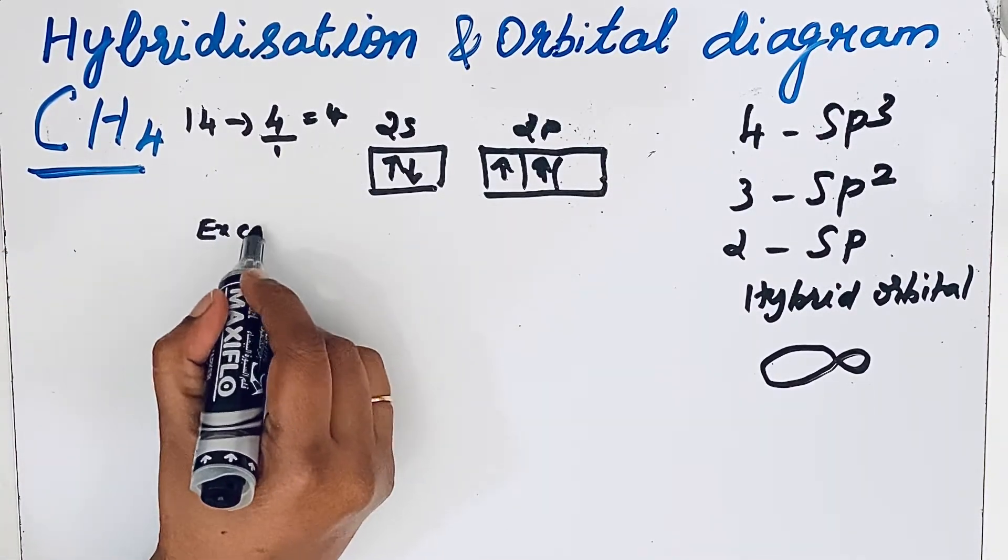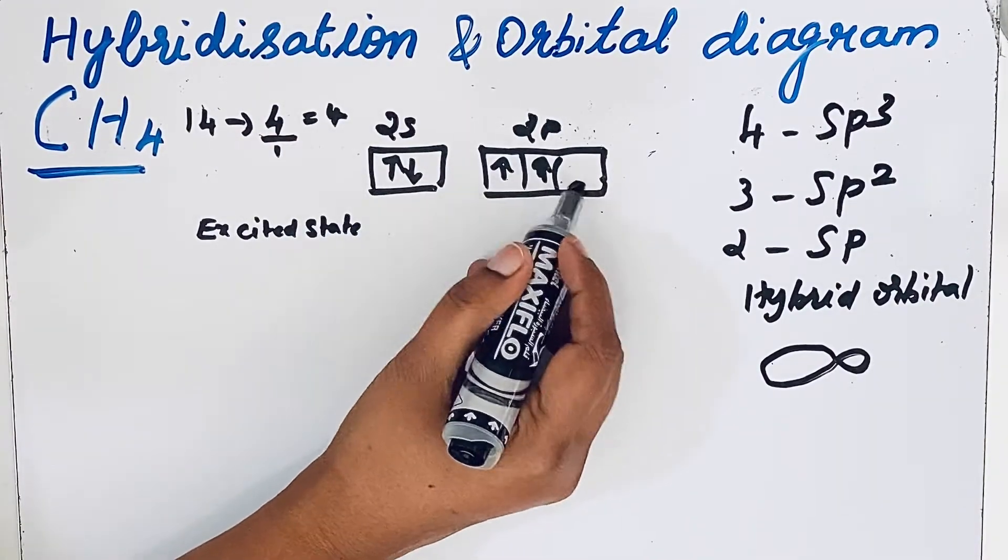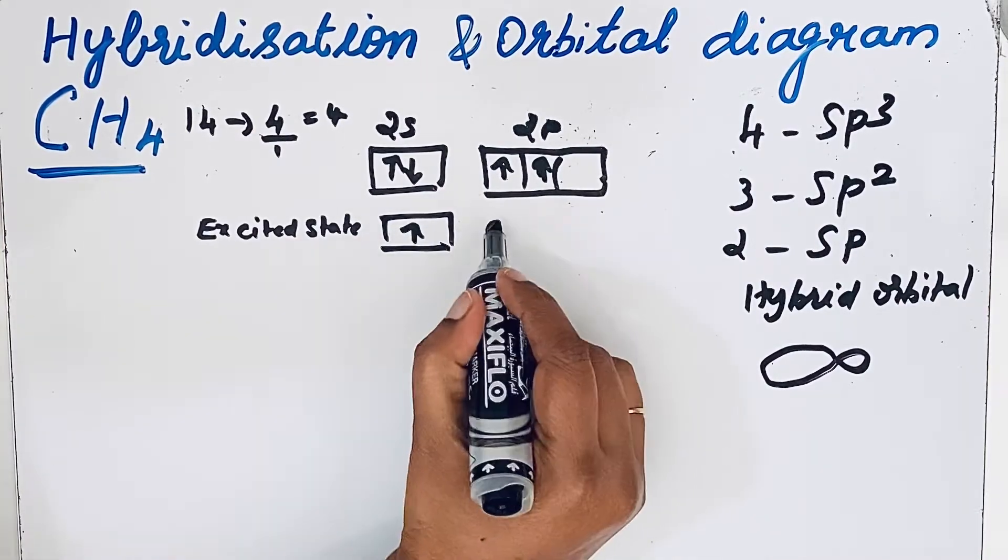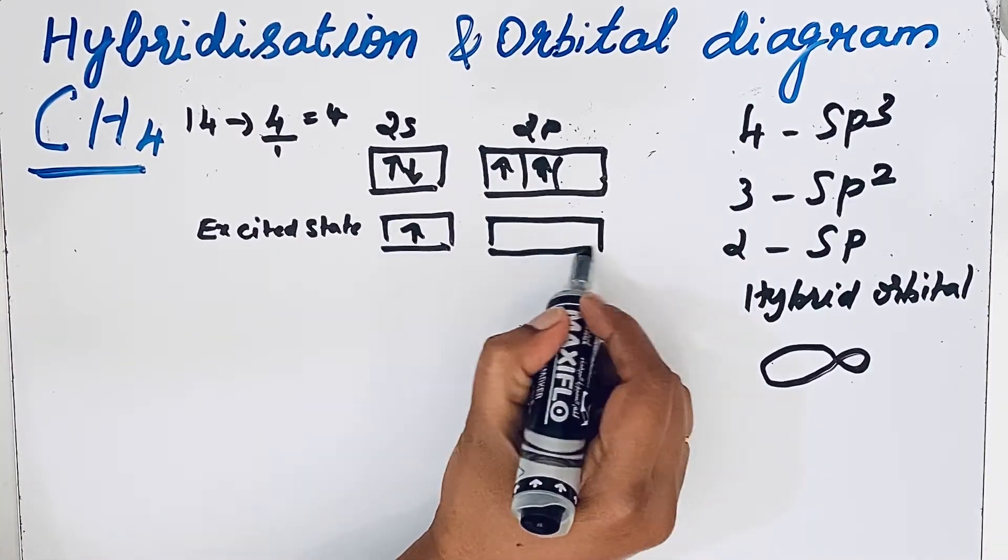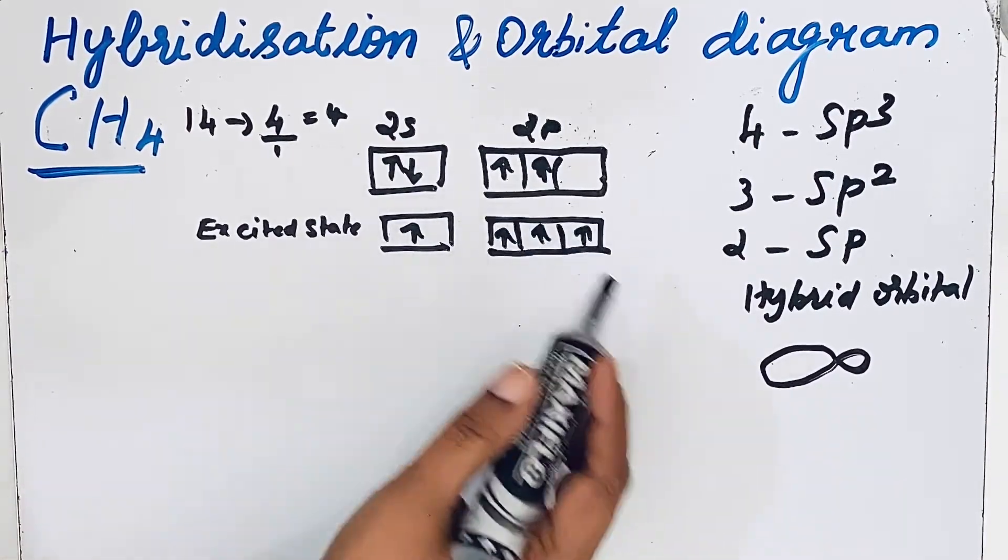Let us write that for excited state. In excited state, 1 electron will move to p orbital. So we will get 3 unpaired electrons in p orbitals.